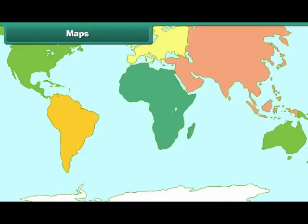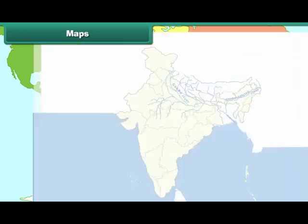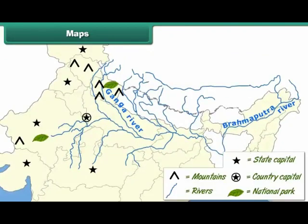A map represents some portion or all of Earth's surface diagrammatically. It shows countries of the world, their capitals, cities and towns. It also shows the various landforms and water bodies on Earth.